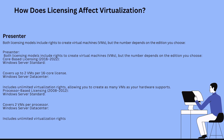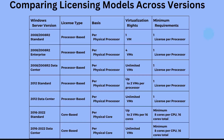To summarize: core-based licensing is modern, scalable, and aligned with today's multi-core servers. Processor-based licensing is simpler but outdated, suitable for legacy server environments. The next slide compares all Windows Server versions — their license type, basis such as physical processors or physical cores, virtualization rights, and minimum requirements.